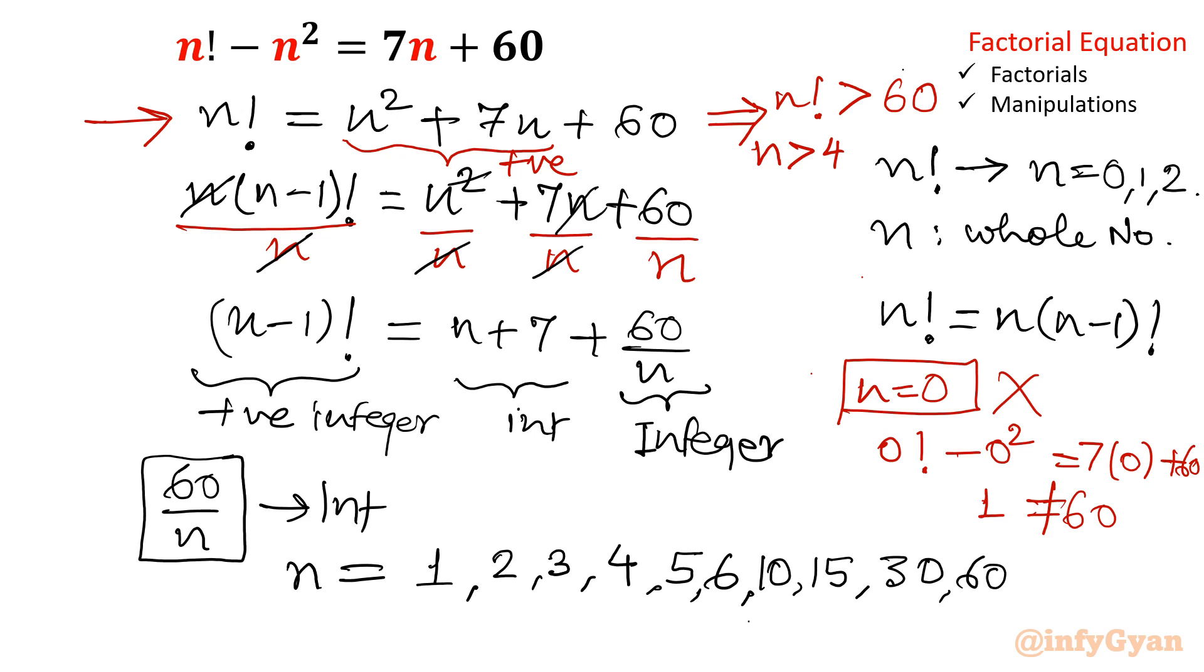So we cannot consider up to 4. If I will consider 5 then 5 factorial yes that is 120 is bigger than 60. So conclusion is n must be greater than 4. So we will reject 1, 2, 3, 4.